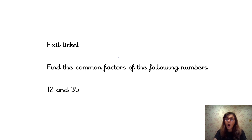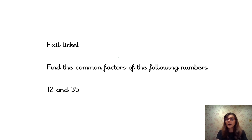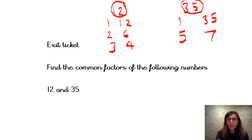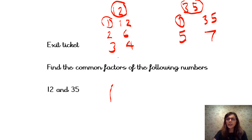Could you find the common factors of 12 and 35? Pause your video. I'd like you to list all the factors of 12, all the factors of 35, and then circle the factors which are common in both. Here I've listed all the factors of 12: 1 and 12, 2 and 6, 3 and 4. And all the factors of 35: 1 and 35, and 5 and 7. Now I'm going to circle any factor which is common in both — and I can see the only factor common to both is 1. So 1 is the only common factor of 12 and 35.